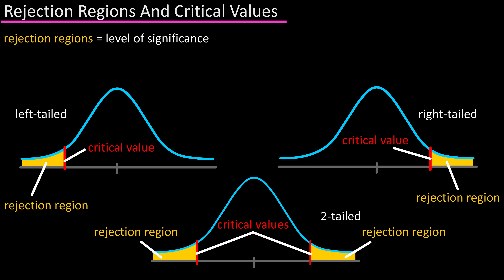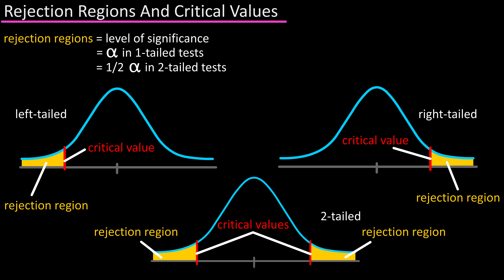The shaded areas are the levels of significance, noted as alpha in one-tailed tests, and one-half alpha for two-tailed tests. The critical values are often noted as z-naught for a one-tailed test, and negative z-naught and positive z-naught for two-tailed tests.